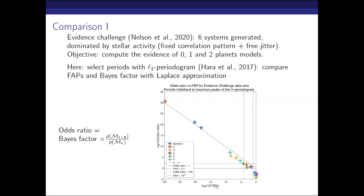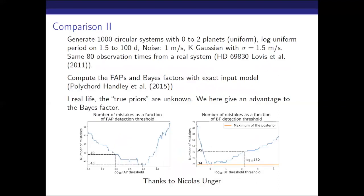I selected the periods with the L1 periodogram — not a purely Bayesian or purely periodogram framework — then compared the Bayes factor with the Laplace approximation centered around these periods and the FAPs of this period. In abscissa I have the log10 of the FAP and in ordinate the log10 of the odds ratio. I print two thresholds: the red threshold corresponds to moderate evidence in favor of adding a planet, and the green threshold corresponds to strong evidence. In those regions you would have the same detections with the odds ratio — a slightly modified version of the Bayes factor — and the false alarm probability. So I did another simulation to also discuss the importance of the detection threshold.